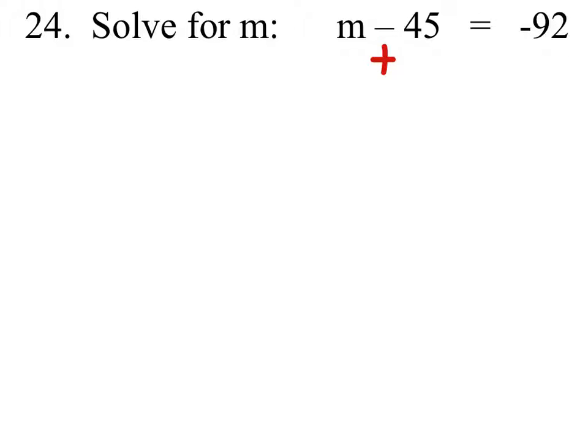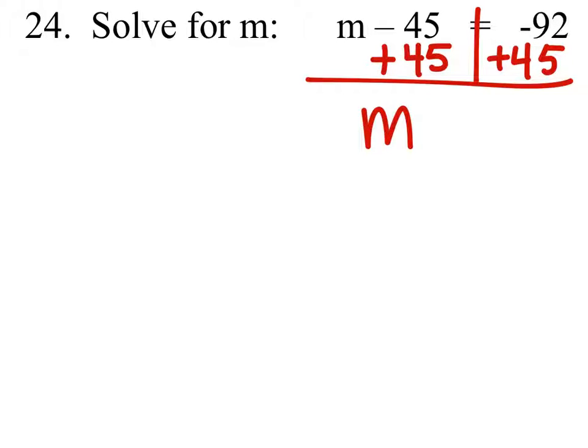Now we need M by itself, which means we need that 45 to be 0, so to make it 0 I'm going to add 45 to that minus 45. But remember, if I do it to one side, I must do it to the other side as well. So I also have negative 92 plus 45, and that would give me M.